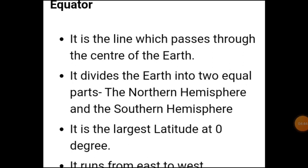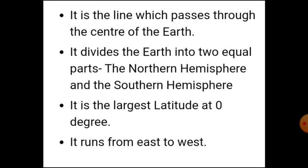Now let's see about the equator. The equator is the line which passes through the center of the earth. It divides the earth into two equal parts: the northern hemisphere and the southern hemisphere. It is the largest latitude at zero degree and it runs from east to west.